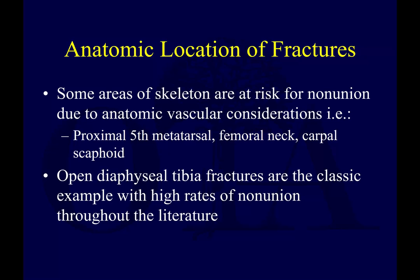Some areas of the skeleton are at more risk for non-union due to anatomic vascular considerations. The proximal fifth metatarsal is known to have somewhat poor vascularity, as is the femoral neck and the carpal scaphoid. These are all examples where, just based on location, we know there's a risk for non-union. Open diaphyseal tibia fractures are also one of the more common fractures you'll see for these reasons.